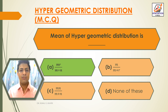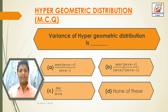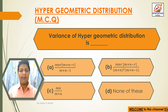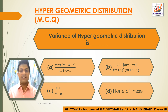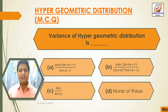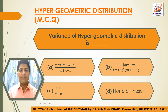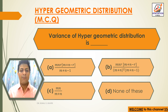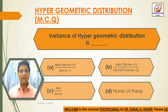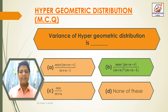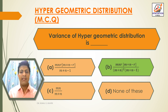Next question: Variance of Hypergeometric distribution is — Option A: mnr(m+n−r) / (m+n−1), Option B: mnr(m+n−r) / [(m+n)²(m+n−1)]. The answer is Option B — mnr(m+n−r) divided by (m+n)² times (m+n−1). Variance of Hypergeometric distribution is mnr(m+n−r) / [(m+n)²(m+n−1)].